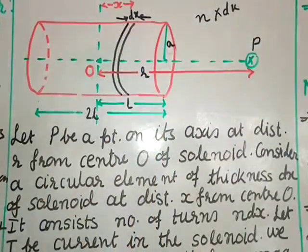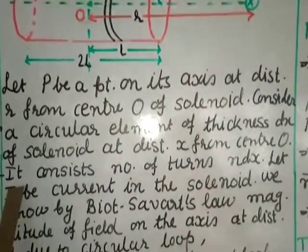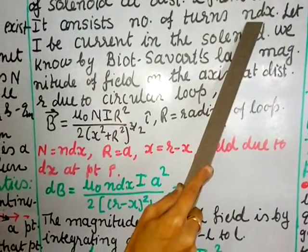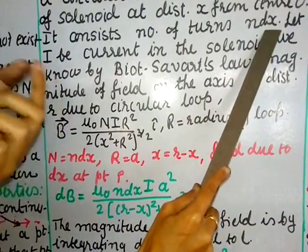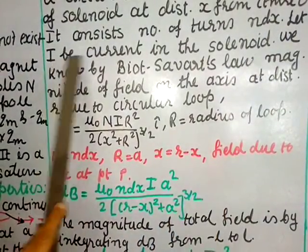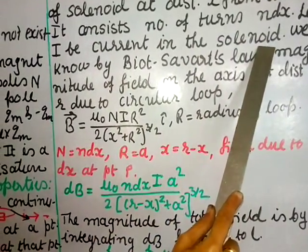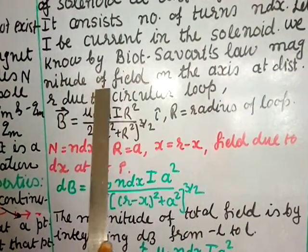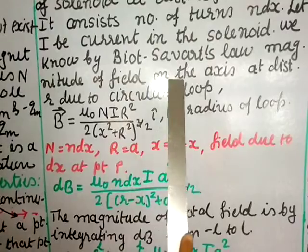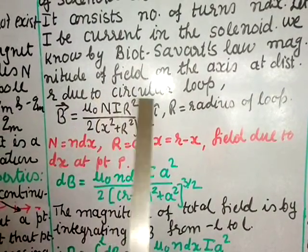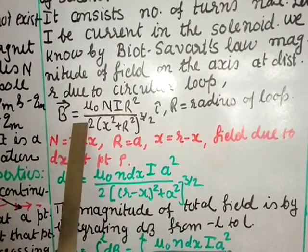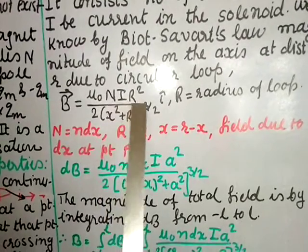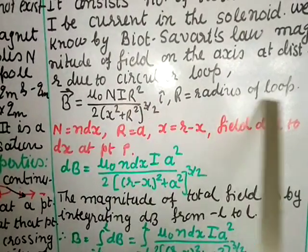Let i be the current in the solenoid. By Biot-Savart's law, the magnitude of the magnetic field on the axis at distance r due to a circular loop is: B = μ₀·n·i·R² / (2·(x² + R²)^(3/2)), where R is the radius of the loop. This was derived in the last chapter.